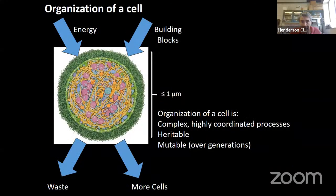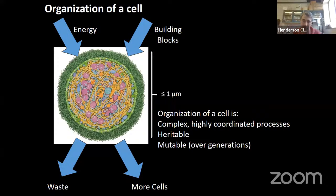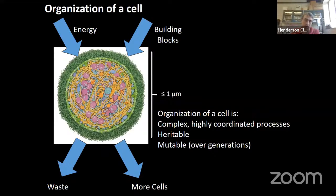To give you context: living systems are highly organized collections of chemicals that process energy and matter to create copies of themselves in an heritable, mutable fashion. And the question of how we go from abiological chemistry to biological chemistry is pretty much the topic of prebiotic chemistry.